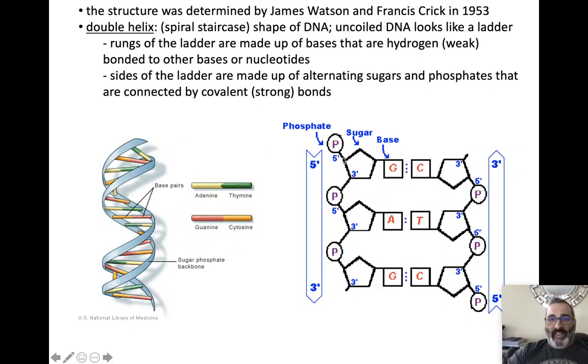The sides of the ladder are made out of alternating sugars and phosphates. The rungs are made out of bases. You're going to see these fives and threes, especially when we talk about DNA replication. The five and three correspond to the carbon on the sugar that attaches to the phosphate. Where it says sugar, that's an oxygen atom. The first carbon is carbon one, then two, three, four, and five.